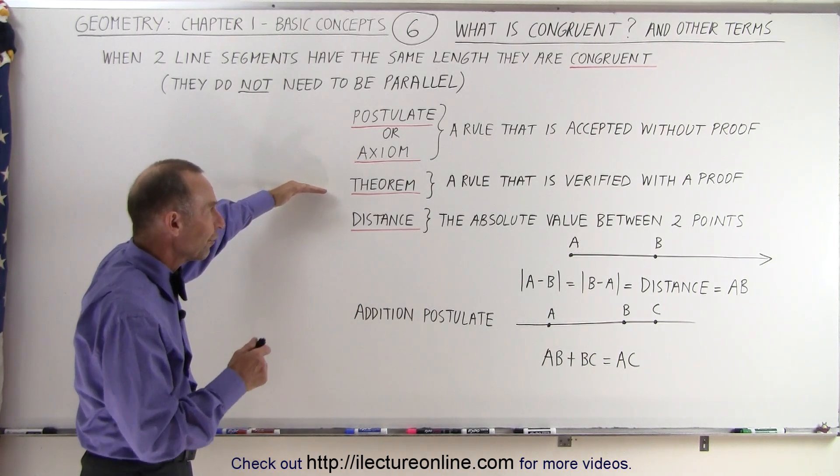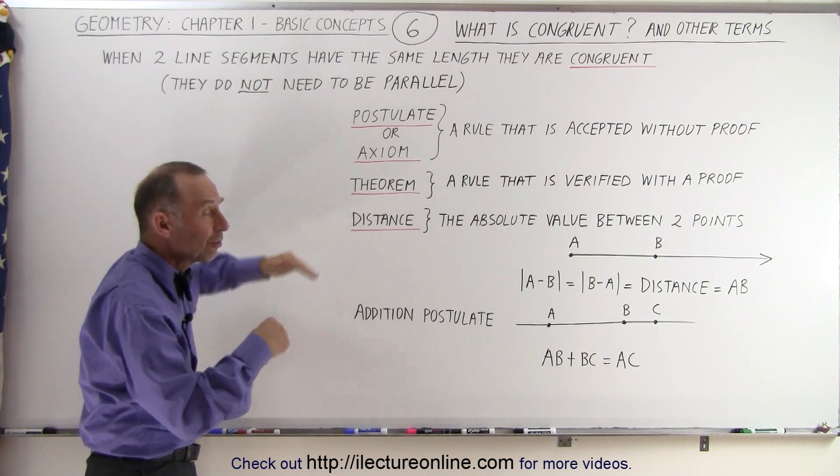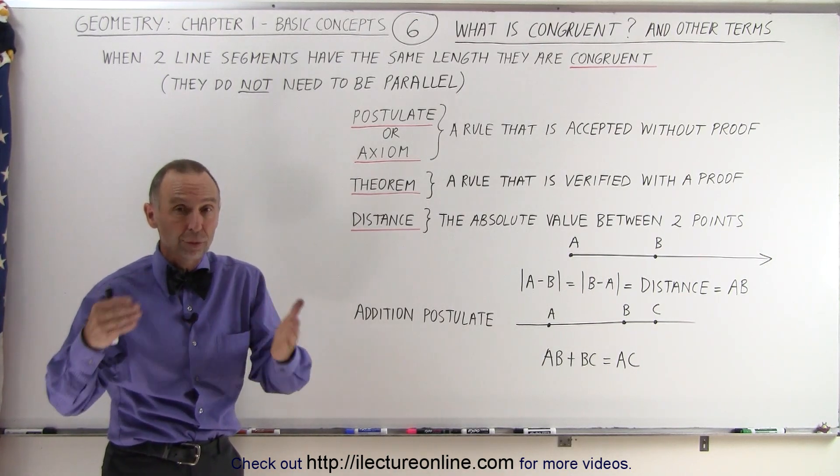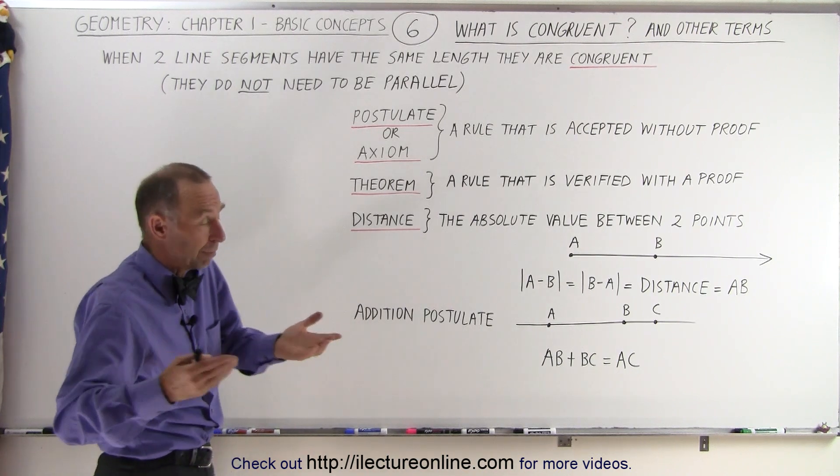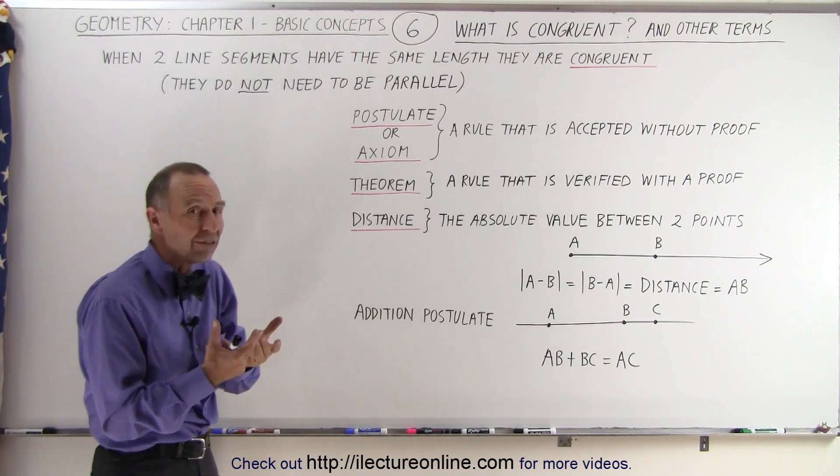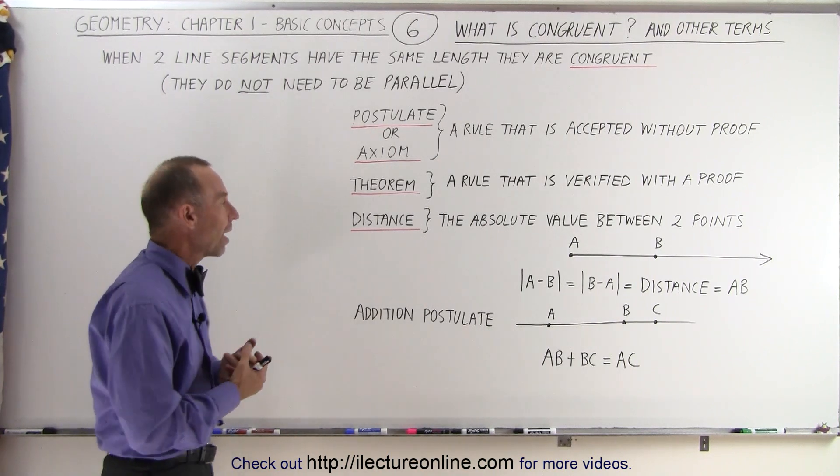A theorem is something different. A theorem is a rule that is verified with a proof. Somebody comes up with a theorem and then will look for a way to prove that theorem so that the theorem then basically becomes a fact once it's been proven. So again, these are different ways in which we establish rules in geometry.